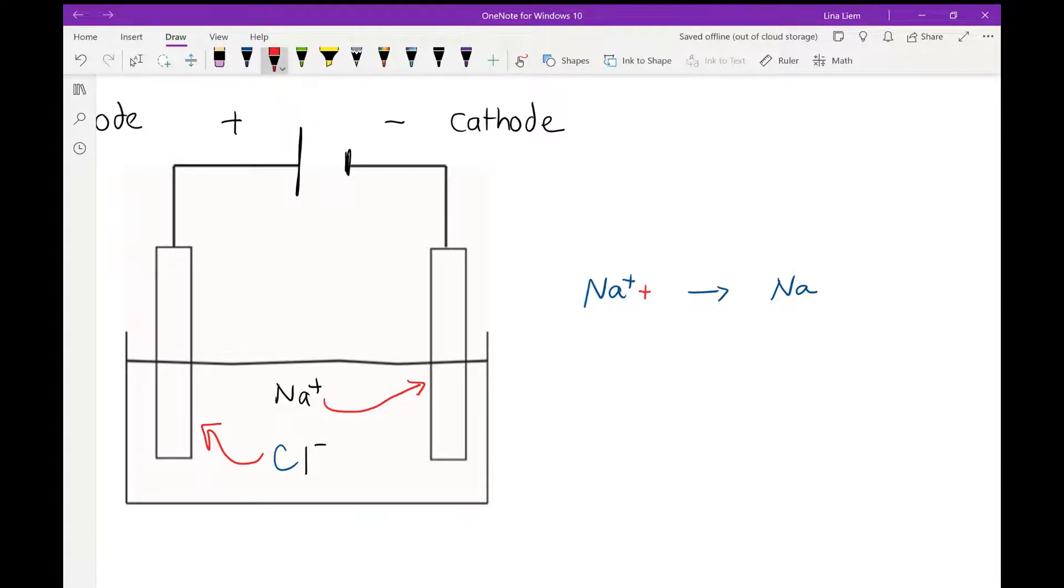To balance the charge out, sodium ion adds one electron on the left and that would make a total of zero charge on the left and on the right. And if you can see here, this side means that sodium ion gains an electron. Gain electron is reduction.